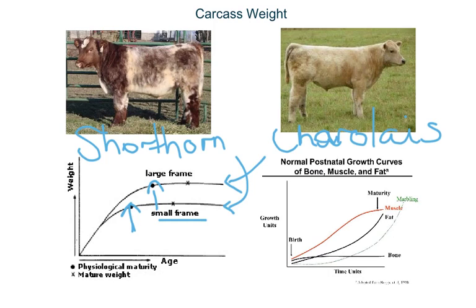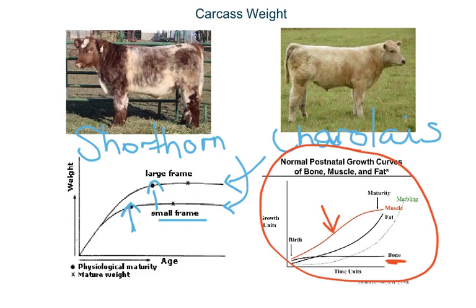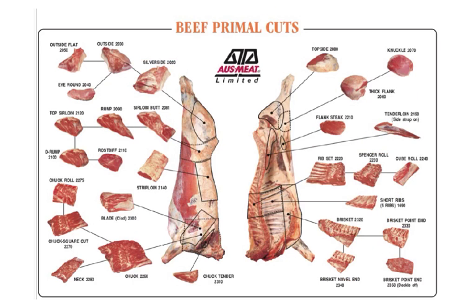This graph shows how tissue is deposited over time. From birth, the first thing deposited is bone. As the animal reaches puberty, it starts laying down muscle a lot faster. As it reaches maturity, it lays down more fat — this is called finishing, where a certain amount of fat is deposited to meet market specs. Marbling comes last. Carcass weight is important because it determines the size of the primal cuts, which ultimately determines the size of the retail cuts.